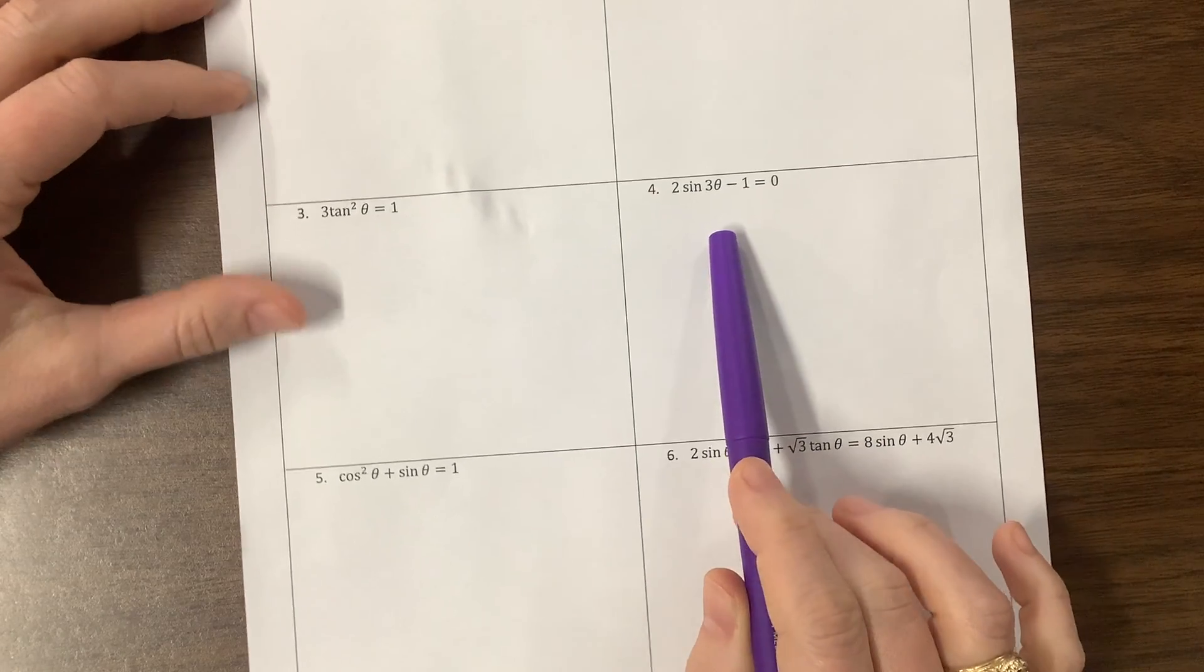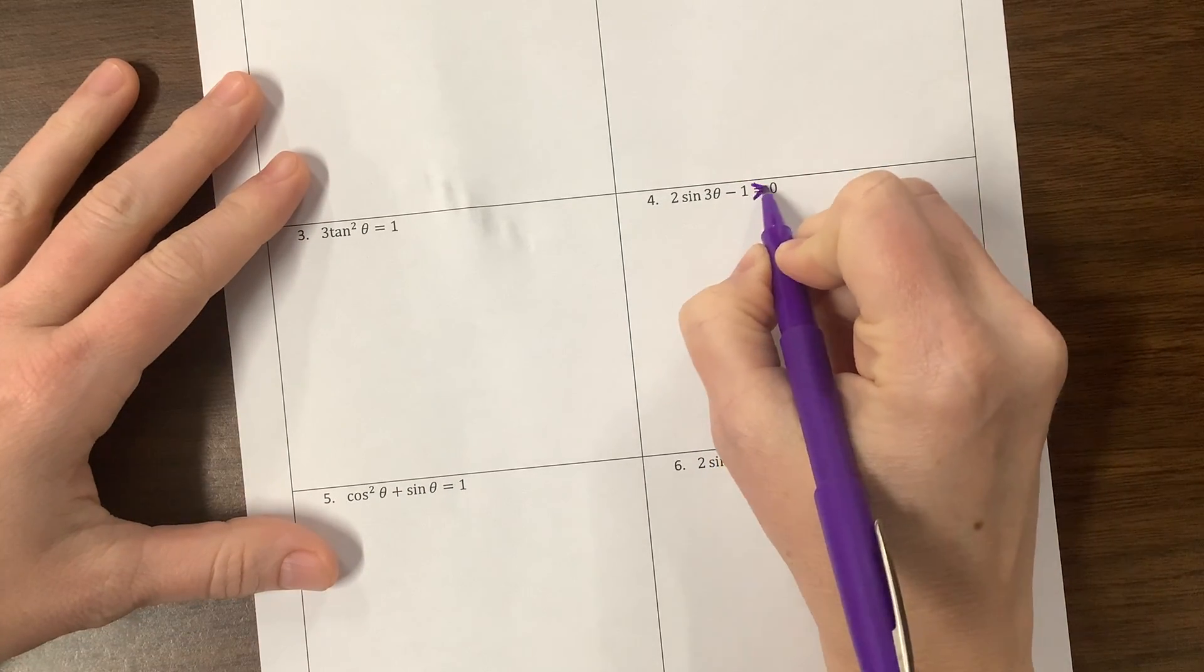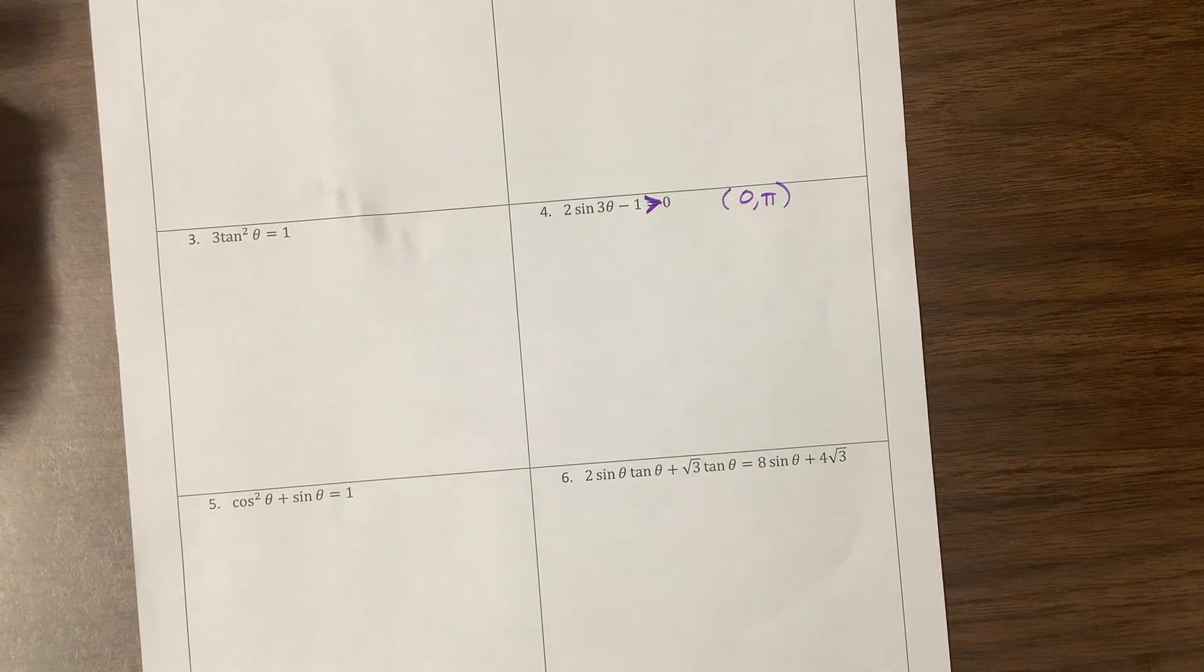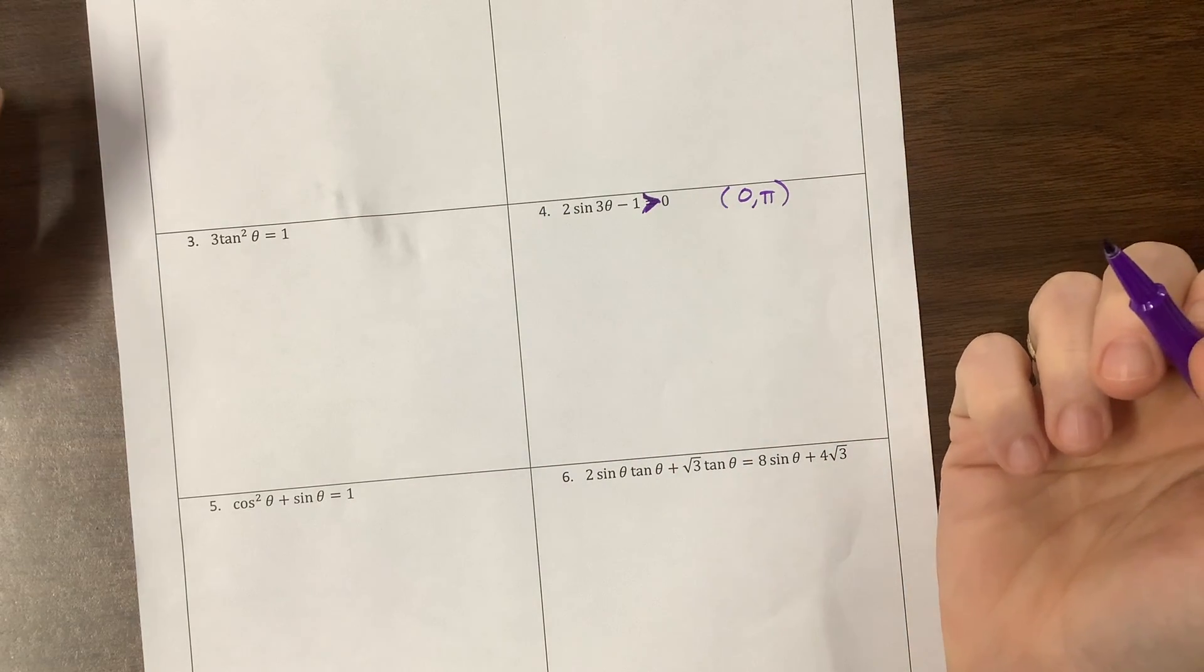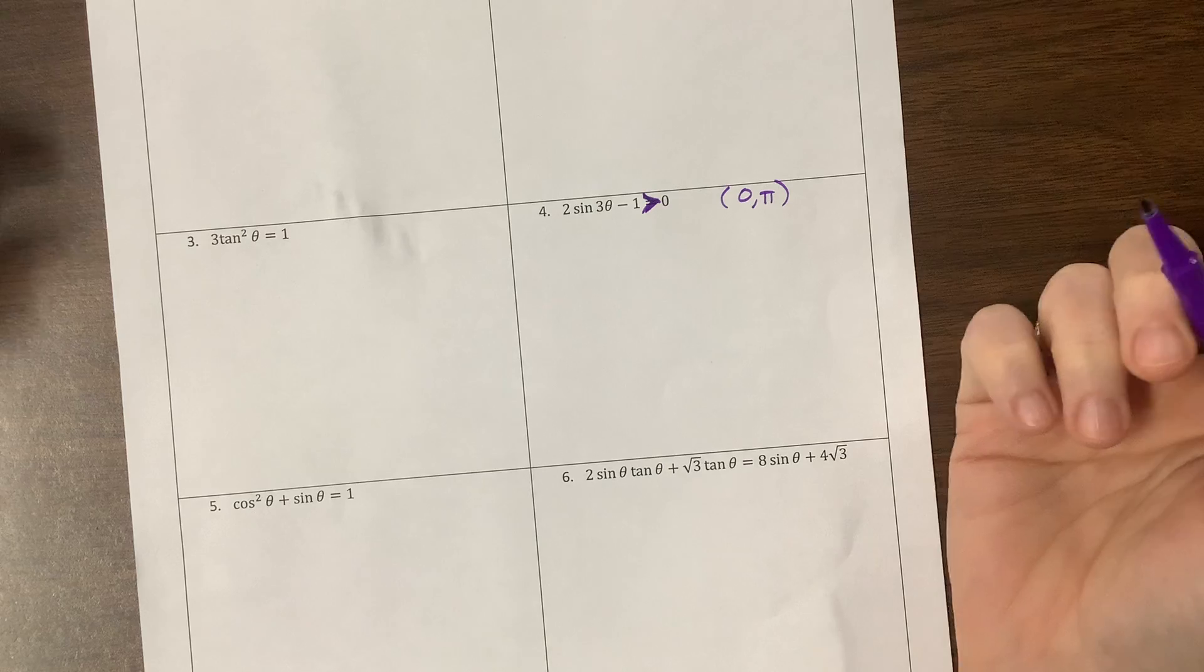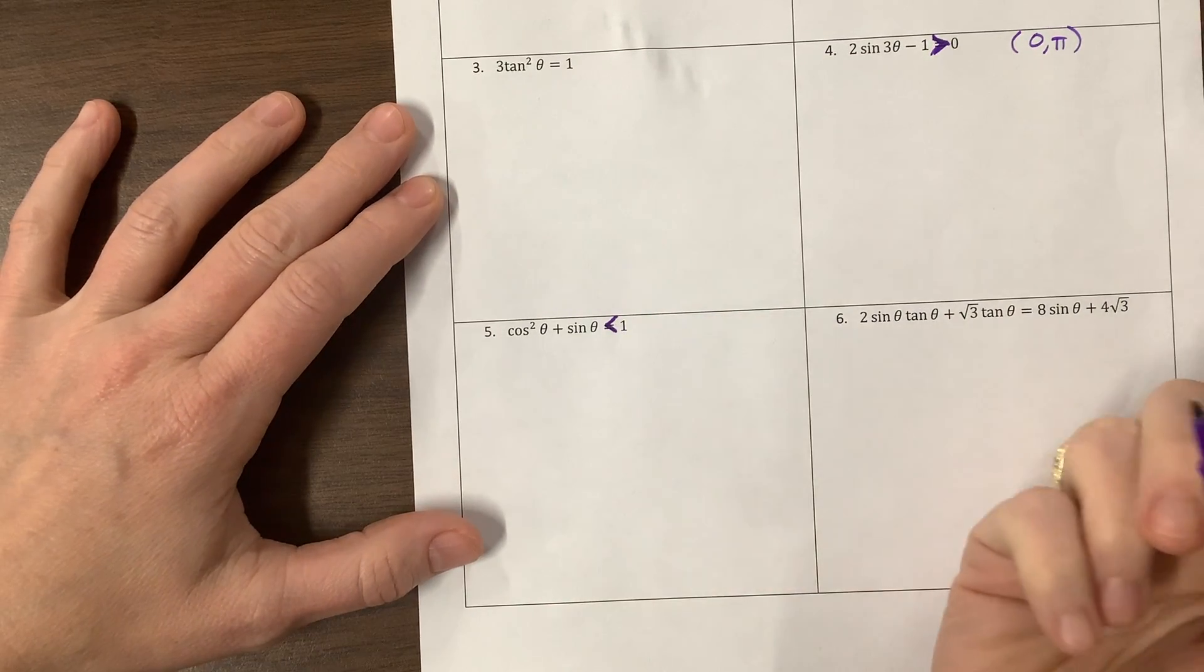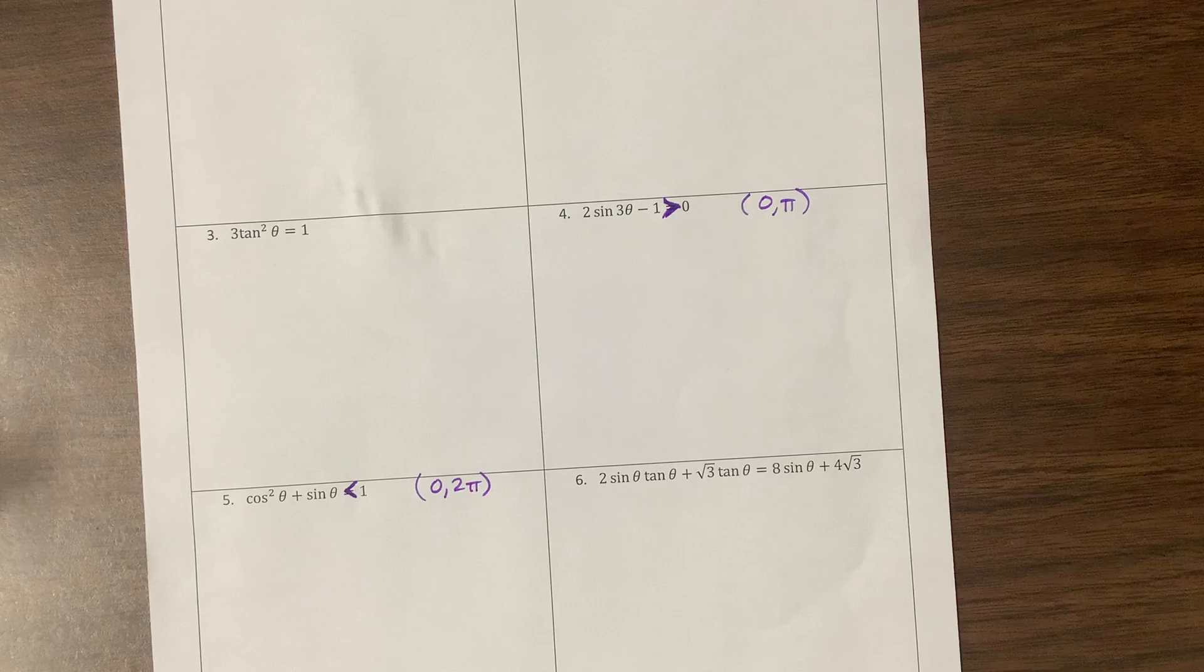But let's jump in. Let's change this problem to be 2 sine of 3 theta minus 1 is greater than 0 and I want us to be on the interval from 0 to pi. So I'm changing that problem so that I can apply what I learned from equations into inequalities and I will say I've been trying to give, to write enough problems to give my students practice and they are tricky to write. So hopefully these two examples, I intend to do number 4 and then if that takes too long then I'll do number 5 in a separate video, but I'm going to change this to be less than 1 on the interval from 0 to 2 pi.